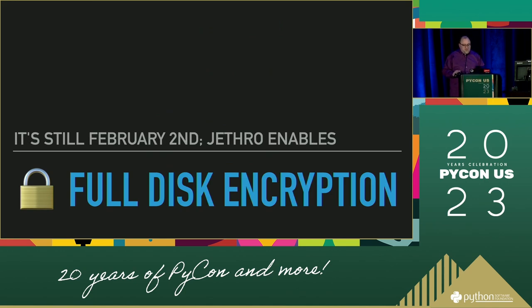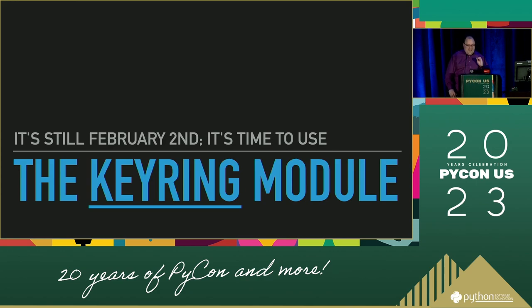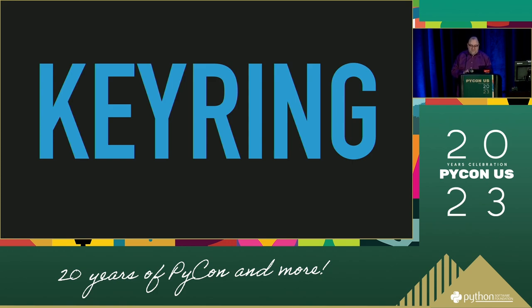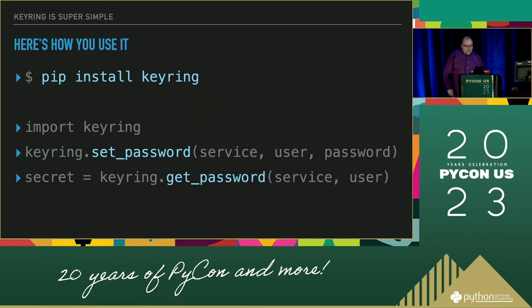It's February 2nd. Jetro wakes up. So Jetro enables full disk encryption in his OS. He encrypts the backup drives too. Now he's got backups and they're encrypted, and the system is encrypted. He's really starting to get serious now. He looks into the best way to actually store his secrets on purpose, and he starts using the keyring module to write them. Jetro uses macOS — Keyring goes into the system keychain, which is encrypted and secure. I should really emphasize this: if you learn anything from this talk, it's to use the keyring module. Keyring is straightforward. Call set_password to save something, call get_password to get it back. Any application which has done this is instantly more secure.